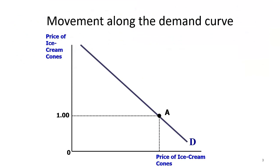This is a demand curve, and we all know the demand curve is downward sloping. Why? Because there is an inverse relationship between the price of the product and the quantity demanded. We measure price on the vertical axis and quantity on the horizontal axis.